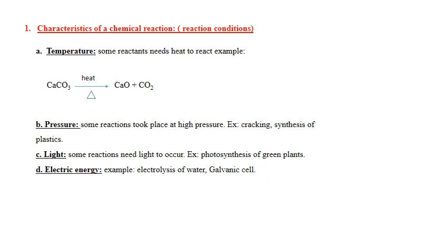Characteristics of a chemical reaction. First we have temperature. Some reactants need heat to react. For example, CaCO3 with heat gives CaO plus CO2. Like cooking, if you don't put it on fire it won't cook. This reaction needs heat to occur.